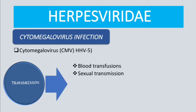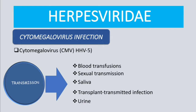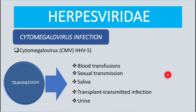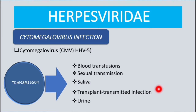sexual transmission, saliva — because CMV replicates in the salivary glands — organ transplants, and urine. In addition, CMV can cross the placenta, making it one of the TORCH infections. We have a separate video on congenital cytomegalovirus infection.